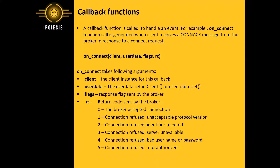Zero means the broker accepted the connection. One means connection refused: unacceptable protocol version. Two means connection refused: identifier rejected. Three means connection refused: server unavailable. Four means connection refused: bad username or password. Five means connection refused: not authorized.